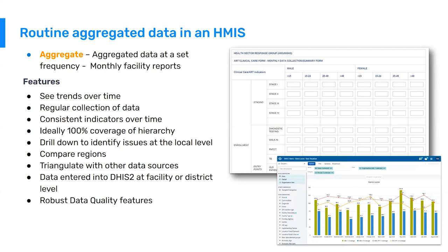Typically, aggregate data has better coverage within the hierarchy. It is easier to capture aggregate data from all health facilities than to capture tracker data from all health facilities. Sending in aggregated data is simply an easier process and easier to take to scale. In most countries using DHIS-2 as an HMIS, the first thing that happens is aggregate HMIS reporting is taken to scale at community health worker, facility, and district level, followed by more individual patient-based data capture as certain health programs require it.